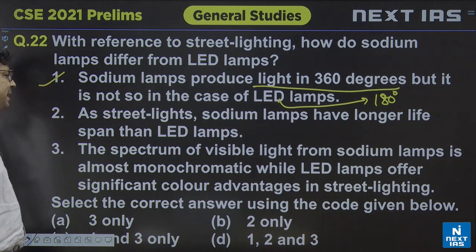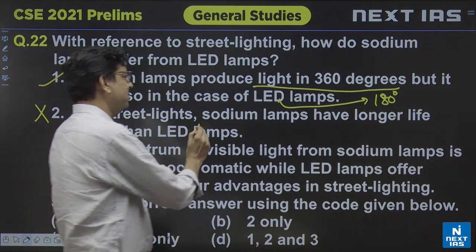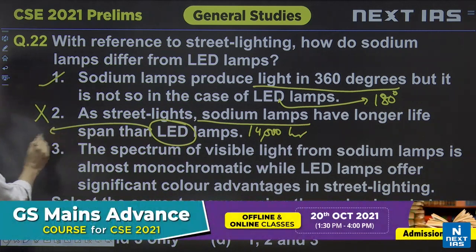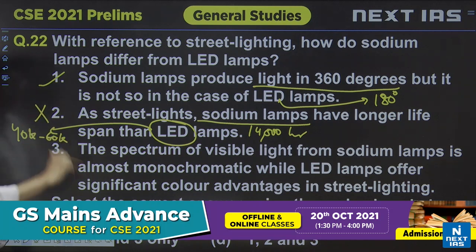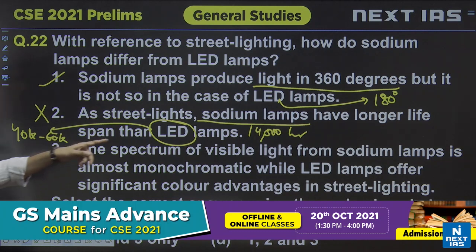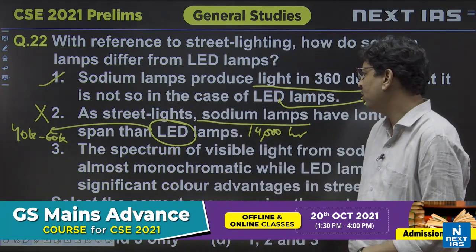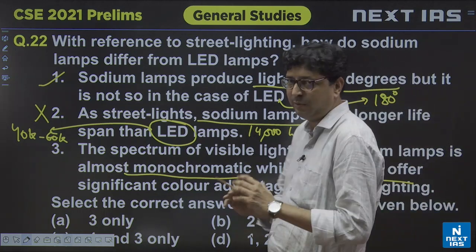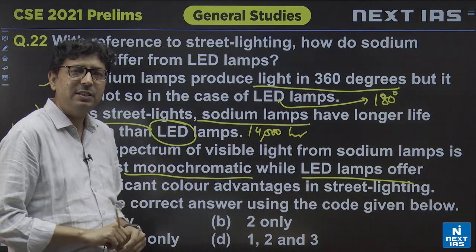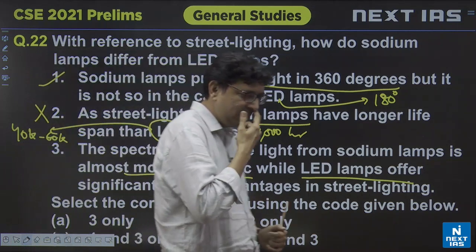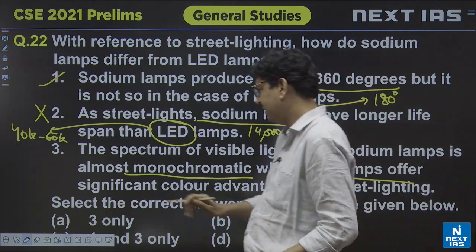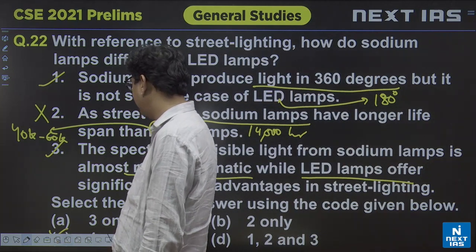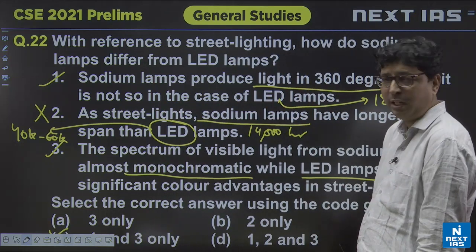As street lights, sodium lamps have a longer lifespan than LED lamps — this statement is incorrect. The average life of sodium lamps is around 14,000 hours, compared to 40,000 to 60,000 hours for LED. The spectrum of visible light from a sodium lamp is almost monochromatic — only one wavelength — while LED lamps offer significant color advantage with a larger range of wavelengths. Statement 3 is correct. So the correct answer for question 22 is C, that is statements 1 and 3.